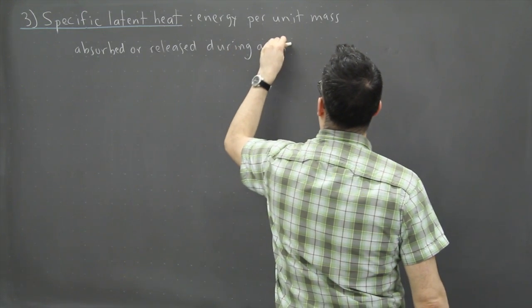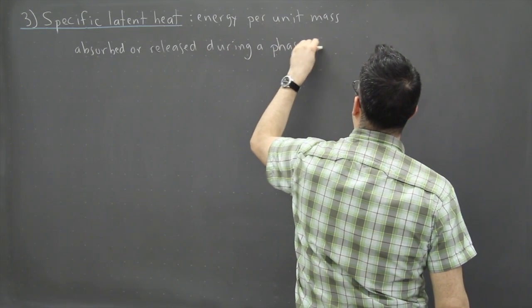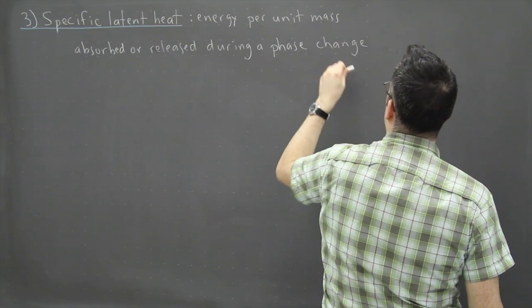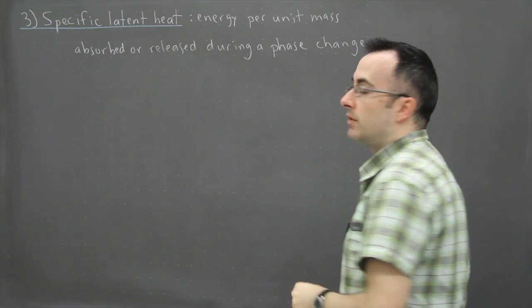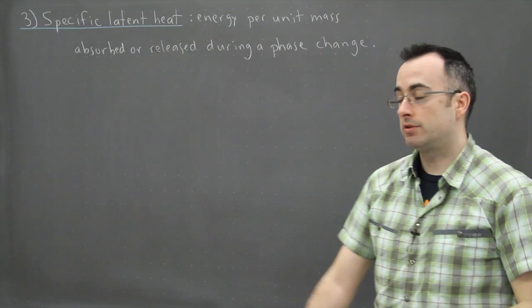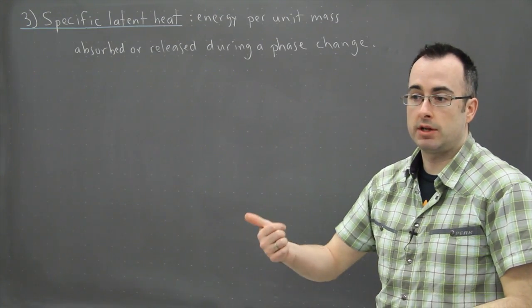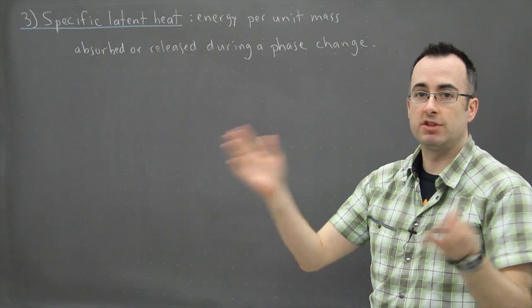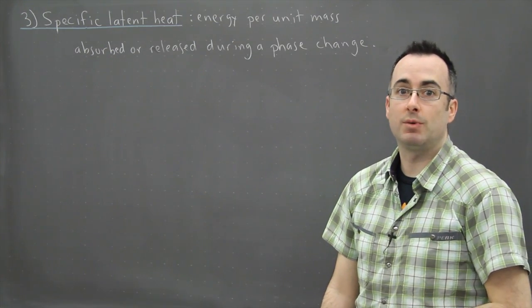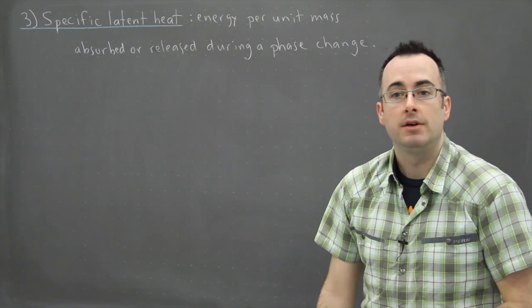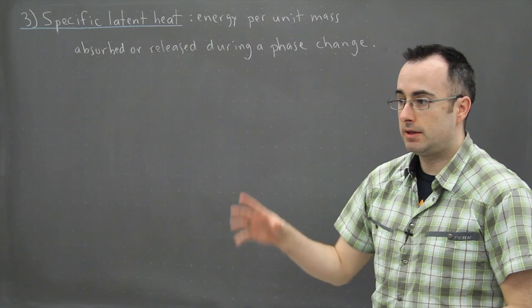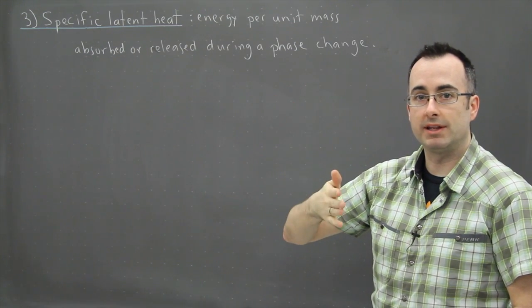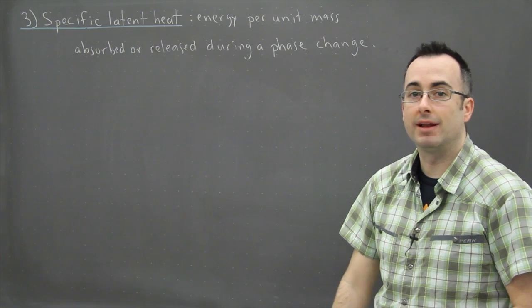Before we had specific heat capacity which was all about raising the temperature of something by one degree. Well this time we have a phase change so something goes from solid to liquid or liquid to gas, or sometimes they can even switch. So you can have a situation for example if it's really hot where the moisture in the air can go directly to a liquid as well, so it can go the opposite way like that.